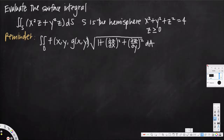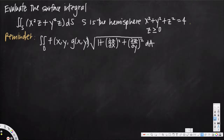In this video we are going to see how to evaluate a surface integral. In this problem we are asked to find the surface integral of a given function where s is the hemisphere x² + y² + z² = 4. Since z ≥ 0, this is half of the sphere, and the radius is 2 because the square root of 4 is 2.